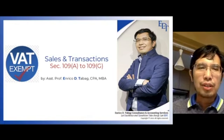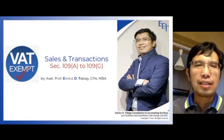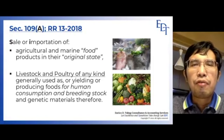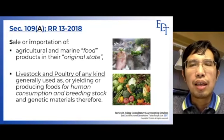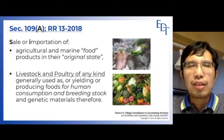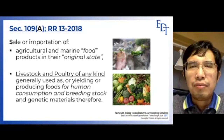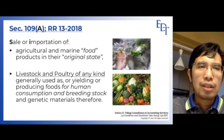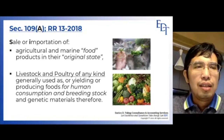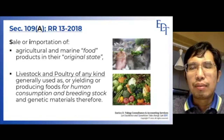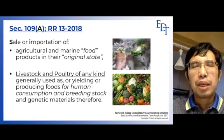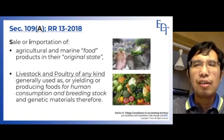Let's proceed with the first item in the list of VAT exempt sales and transactions. We already discussed this initially during our first 4 videos. Let us proceed again with section 109A: sale or importation of agricultural and marine food products in their original state. The exemption here pertains not only to sale but likewise to importation.